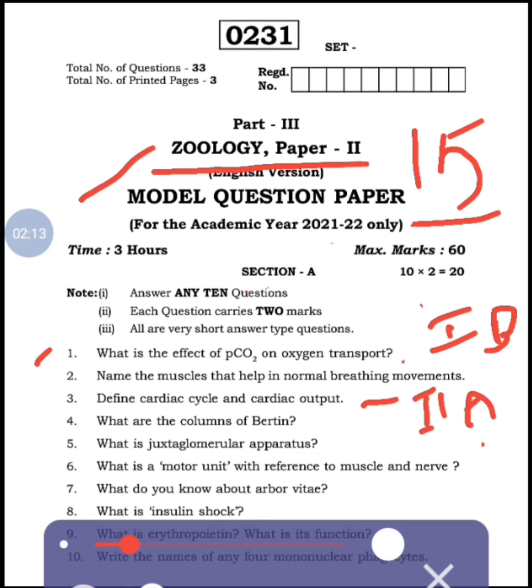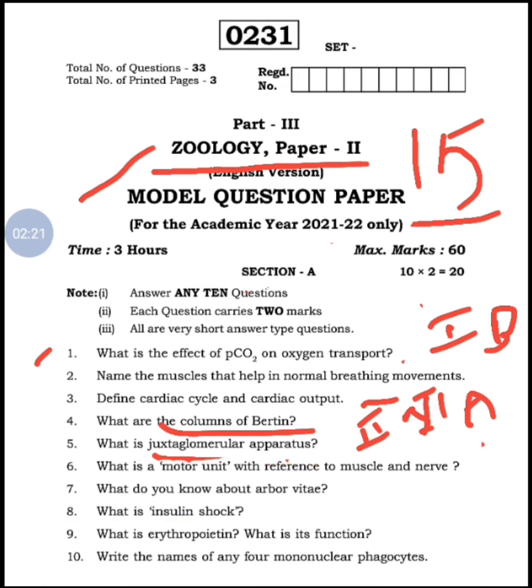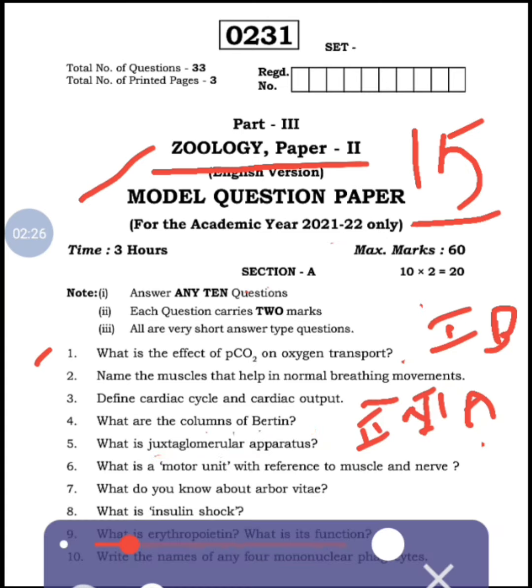Fifth question: Juxtaglomerular apparatus - also from 2B. So from the same chapter, two questions are given. Sixth question: What is a motor unit with reference to muscle and nerve? - from 3A, muscular and skeletal system. Seventh: What do you know about arbor vitae? - from 3B. Eighth: Insulin shock - from 4A, endocrine system.